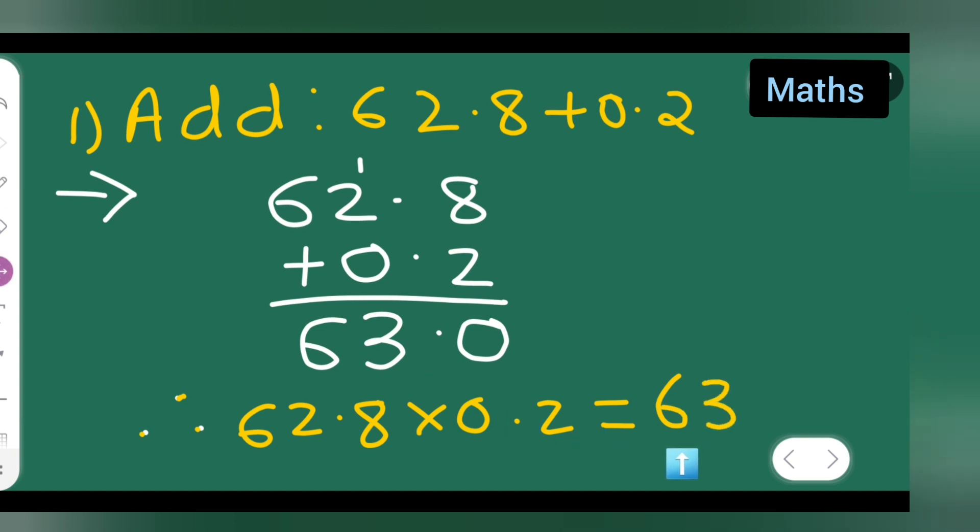So your answer will be 63 only, okay? When you multiply these two numbers you will get 63. So I hope you'll have understood how to add given numbers and thanks for watching.